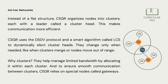Instead of a flat structure, CSGR organizes nodes into clusters, each with a leader called a cluster head. This makes communication more efficient. CSGR uses the DSTV protocol in a smart algorithm called LCS to dynamically elect cluster heads. They change only when needed, like when clusters merge or nodes move out of range.